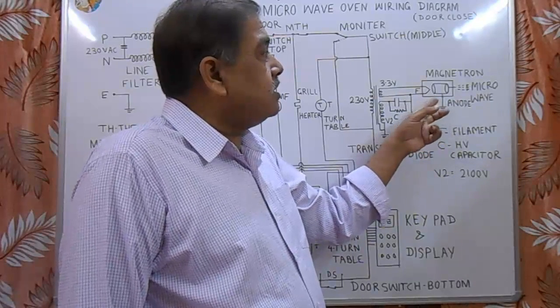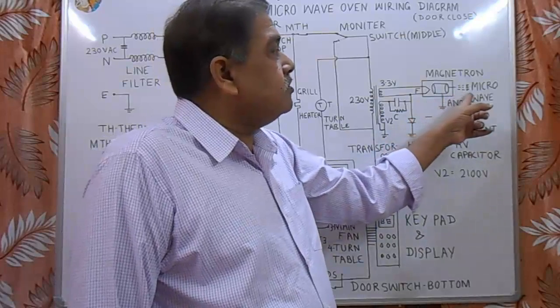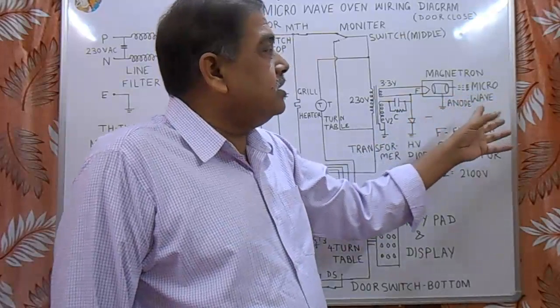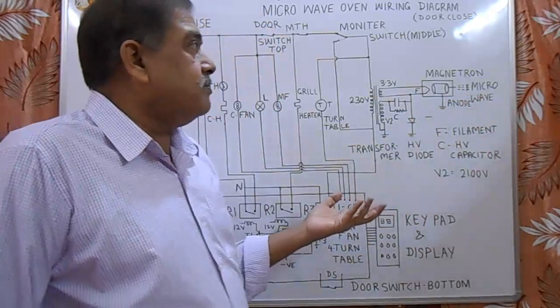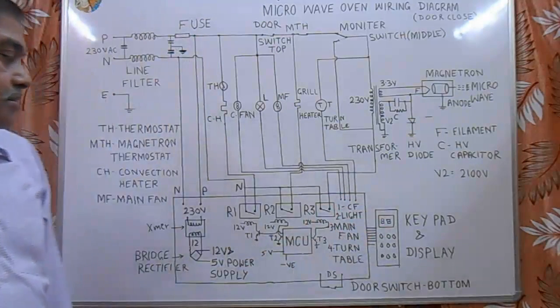In this way, this magnetron generates microwaves which go to the heating chamber and heat the food item whatever is inside the chamber. So, in this way, this complete circuit is there.